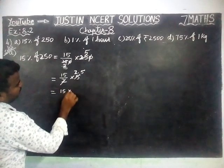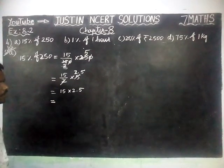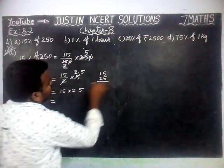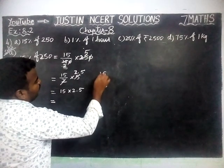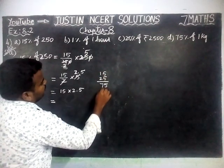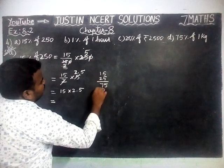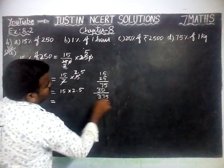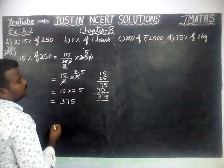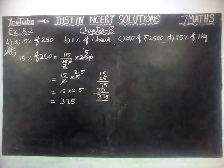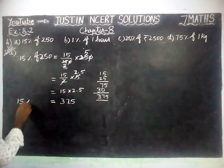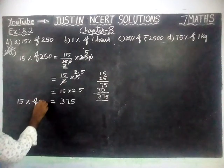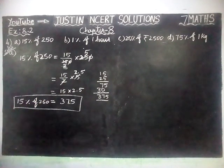15 into 25 — we have to multiply 15 and 25. Forget about the decimal point, just multiply 15 and 25. 5 fives are 25 remaining 2; 5 ones are 5, 5 plus 2 is 7. 2 fives are 10 remaining 1; 1 two is 2, 2 plus 1 is 3. So 375 is coming. We have one decimal point, so the answer is 37.5. Therefore 15% of 250 equals 37.5.